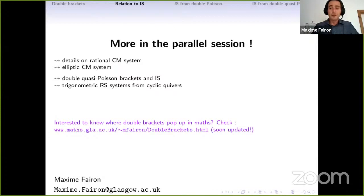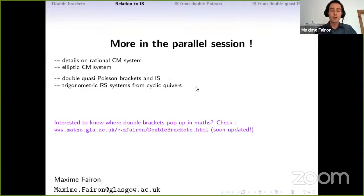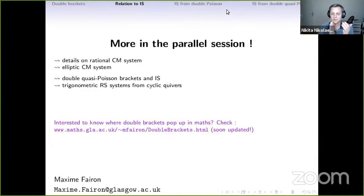That is the general idea of non-commutative Poisson geometry and its application to integrable systems. In the parallel talk, I will explain details on the Ruijsenaars-Schneider and Gibbons-Hermsen system, how to get the elliptic Gibbons-Hermsen system with such an interpretation, and how to get double quasi-Poisson brackets in relation to integrable systems. If you are interested in where double brackets appear in mathematics, I've collected lots of applications on my website — have a look if something seems fun. Thank you very much.